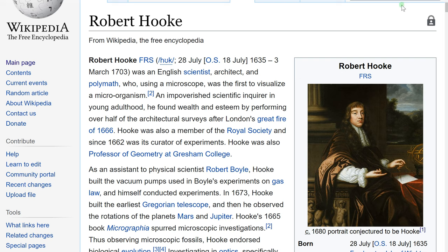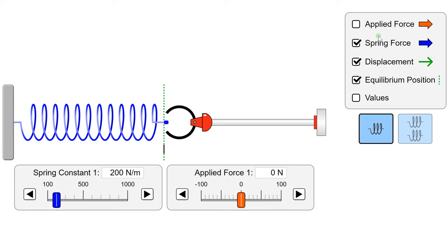Anyway, let's take a look at a simulator of a spring to understand what the spring force is. Here I have a spring, and this little robot arm is going to pull on the spring. We're going to see the force of the spring represented as a blue arrow, and the displacement from equilibrium position as a green arrow. This dotted line right here is where the spring is at when it's relaxed, when nothing is pulling on it or compressing it.